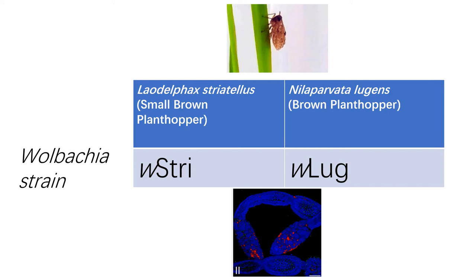The two Wolbachia strains we were looking at were the WSTRI strain, which was the donor Wolbachia, and the WLUG strain, which is the Wolbachia natively present in the brown plant hopper. Wolbachia are intracellular bacteria — in other words, they live inside the cells, as indicated by those red marks in that bottom picture there.